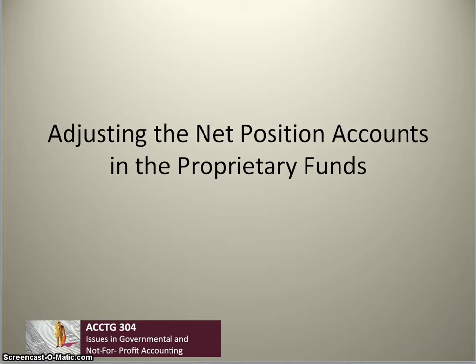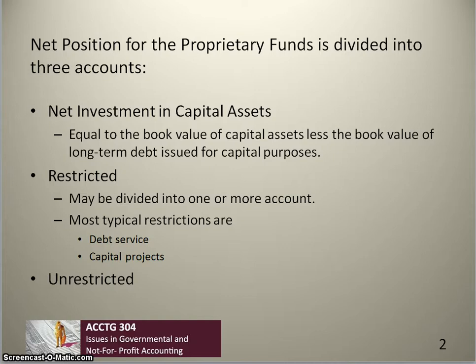Net position in the proprietary funds is divided into three accounts: net investment in capital assets, restricted net position, and unrestricted net position. Net investment in capital assets equals the book value of capital assets net of depreciation, less the book value of long-term debt issued for capital purposes. Restricted net position is typically divided into accounts such as restricted for debt service and restricted for capital projects. The balance of net position is recorded as unrestricted.